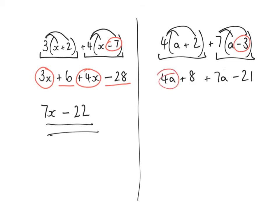Then I've got 4a add 7a, which gives me 11a. And I've got the 8 subtract the 21, which gives me negative 13.